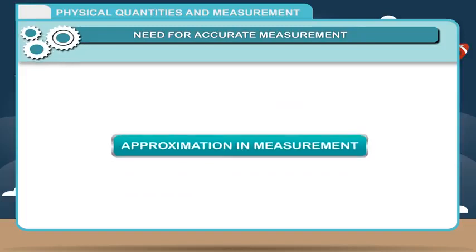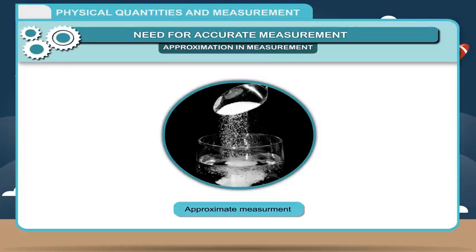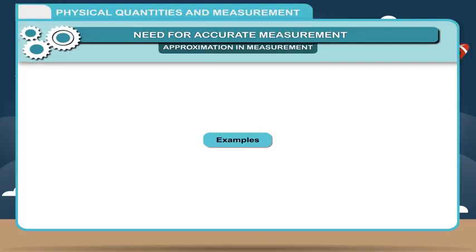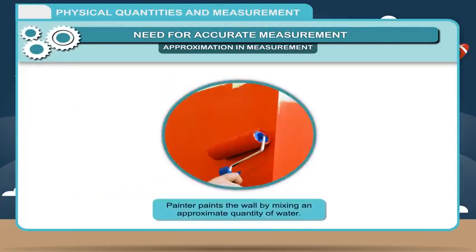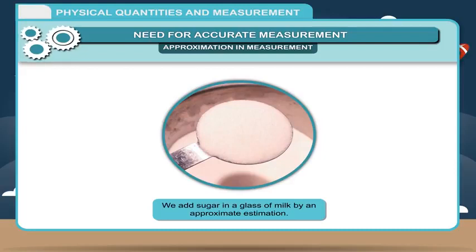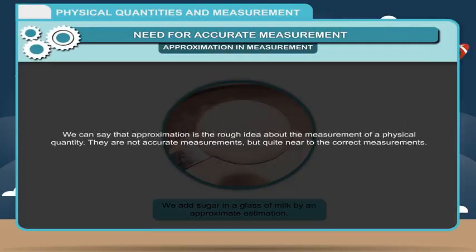Approximation in Measurement: In our daily life, sometimes we need only approximate, near-to-accurate measurement. The approximate estimation is a quicker judgment about any measurement. Examples: 1. We add salt in vegetables by a quick judgment or approximation. 2. A painter paints the wall by mixing an approximate quantity of water. 3. We add sugar in a glass of milk by approximate estimation. Hence, approximation is the rough idea about the measurement of a physical quantity — not accurate measurements, but quite near to the correct ones.